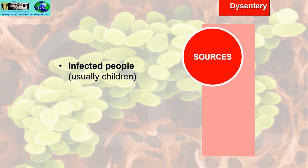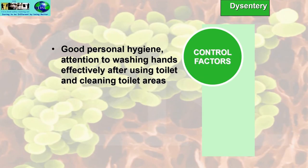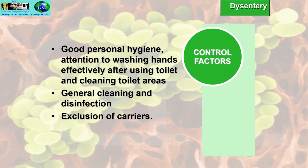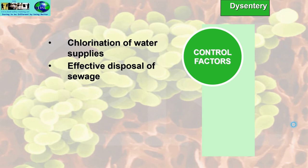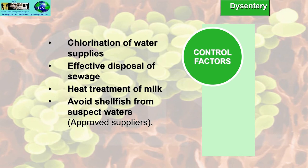Sources of dysentery include infected people — usually children — and contaminated food and water. Control factors include good personal hygiene especially hand washing after using the toilet, cleaning toilet areas, general cleaning and disinfection, exclusion of carriers from the workplace, chlorination of water supplies, effective sewage disposal, heat treatment of milk, and avoiding shellfish from suspect waters — use approved reputable suppliers.